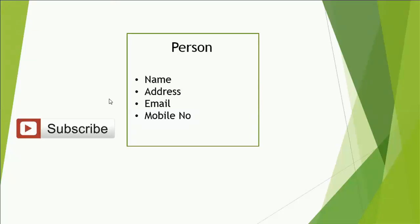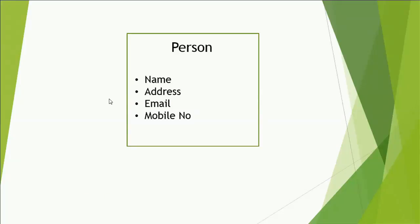Consider we have a class called Person. It has properties such as name, address, email, and mobile number. Now let's consider we have to create an application for customer management. In that we have to create one class called Customer. But the Customer class has the same attributes as the Person class: name, address, email, and mobile number.